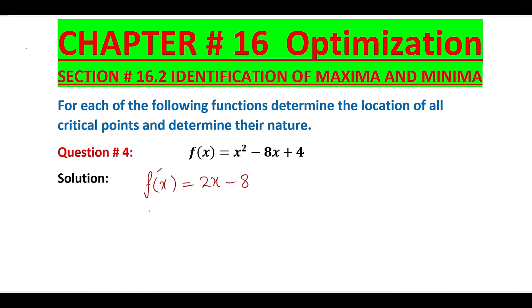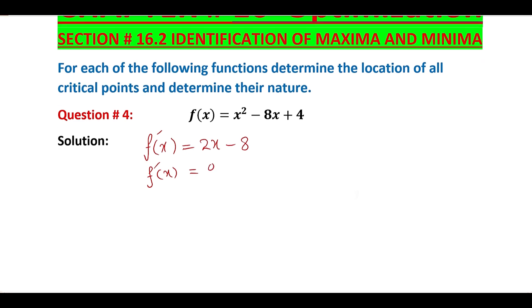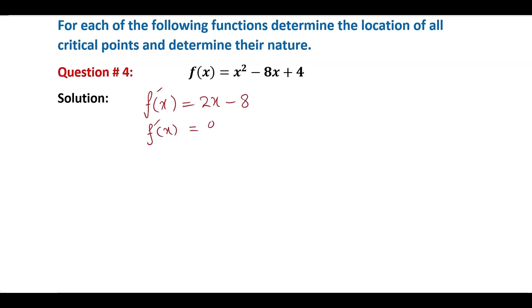Next, we will find the critical points. So we will set the first derivative equal to 0 and solve the equation. So, 2x minus 8 is equal to 0. That means 2x is equal to 8.